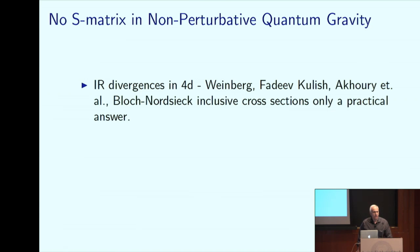Now, we know that this is true in four dimensions. This is an old result. There are infrared divergences in the scattering matrix in four dimensions that come from the fact that there is zero probability not to emit an infinite number of gravitons. The scattering operator doesn't exist in Fock space. Fadeev and Kulish, and more lately, Akhoury and his collaborators have tried to construct in perturbation theory a space in which the scattering operator exists.